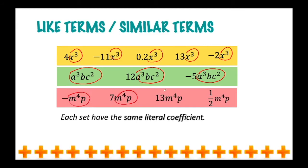In adding polynomials, you can only add or combine terms that have the same literal coefficient. To add them, just add the numerical coefficient and copy the same literal coefficient. If the terms have different literal coefficients, then you cannot combine them nor add them. But instead, you just have to arrange them in proper order.